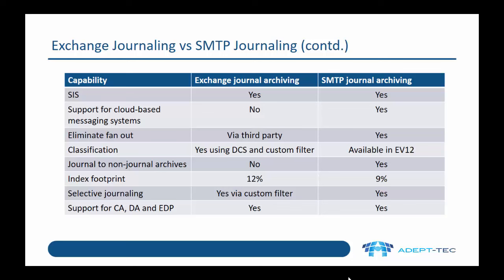The index footprint for exchange journal archiving is about 12% of the size of the original data, whereas because SMTP journal archiving uses EML files instead of MAPI, the index footprint is only about 9% of the original data size.